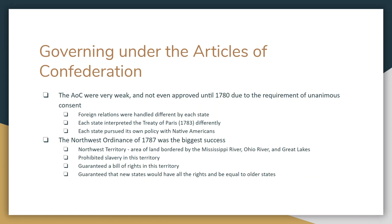There's really only one success of the Articles of Confederation: the Northwest Ordinance of 1787. Today when you think of the Northwest, you're probably thinking Seattle, Oregon, Montana — but in 1787, the Northwest Ordinance referred to the area bounded by the Mississippi River, Ohio River, and Great Lakes. Basically today the states of Indiana, Michigan, Illinois, Wisconsin, and parts of Ohio.